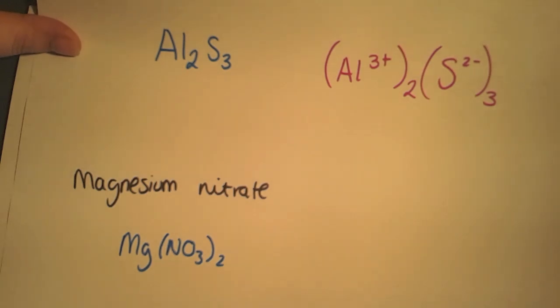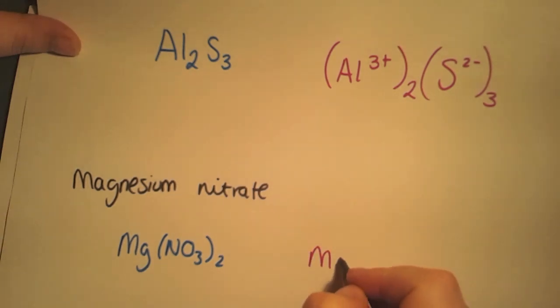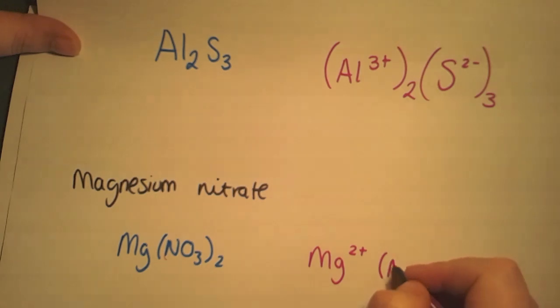So Mg, metal, is in group two, so you'll find it's 2+. And to get the charge of the nitrate, that's actually in the data book. It's written as NO3-. And as we have two of them, we need to put brackets around them, just as it is in the chemical formulae, to show it's the whole part.